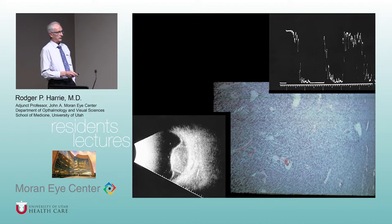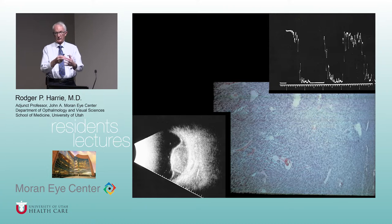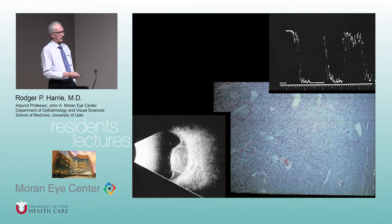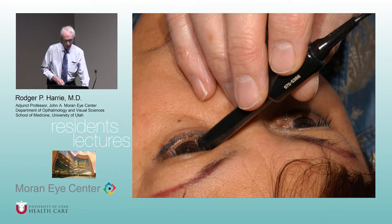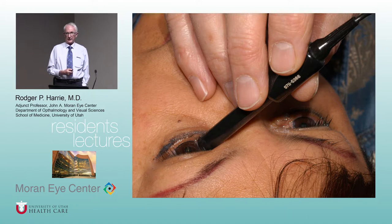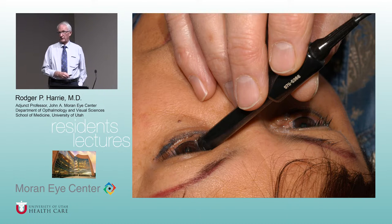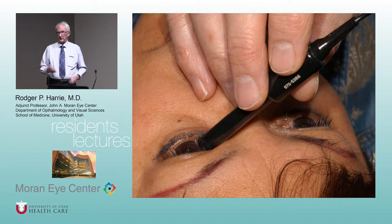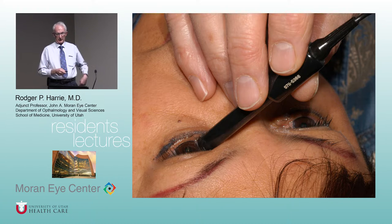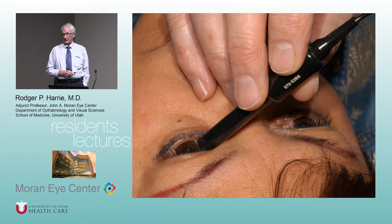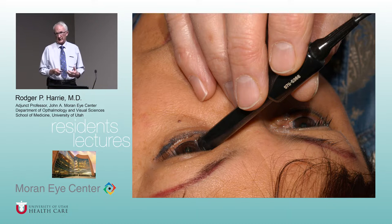The A-scan probe looks like a pencil — thinner than the B-scan probe. There's no marker on the A-scan probe because the sound beam goes out in all directions from the transducer; it doesn't sweep like the B-scan. There's often confusion about A-scan — reps at conferences will say their instrument has an A-scan, meaning biometry. But biometry probes and diagnostic A-scan are different. I use a separate dedicated diagnostic A-scan probe.